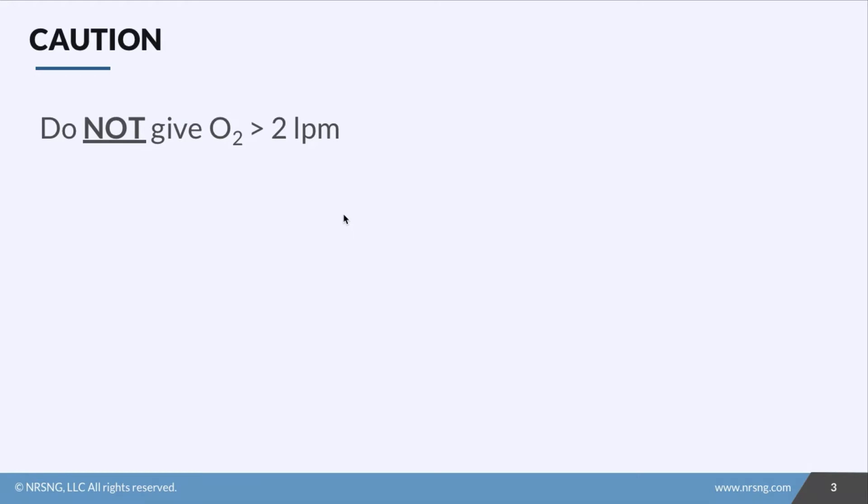Well remember they have poor gas exchange. So their O2 levels drop, their CO2 levels rise. And you're thinking aren't we supposed to give oxygen when our O2 levels drop? Well here's the issue with COPD. This is a chronic condition. So what happens is COPD patients' bodies will accommodate to these changes. We call it the 50-50 club. Their PaO2 will be 50 when it should be 60 to 100, and their PCO2 will also be about 50 where it should be 35 to 45. And this is where they live. This is what they're used to.